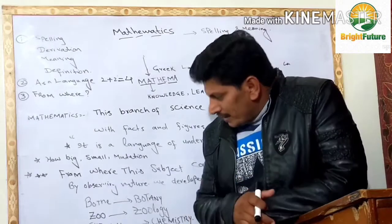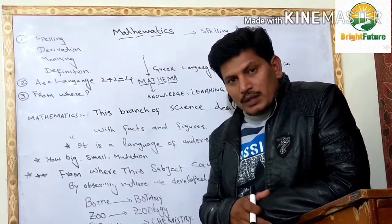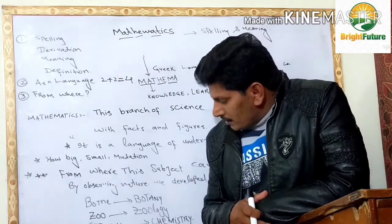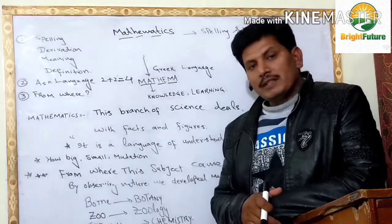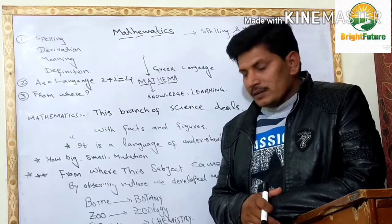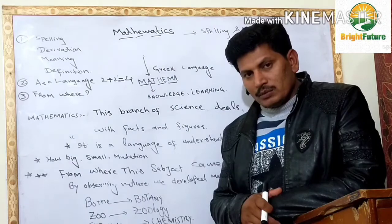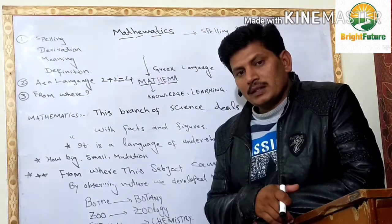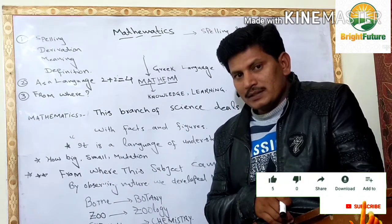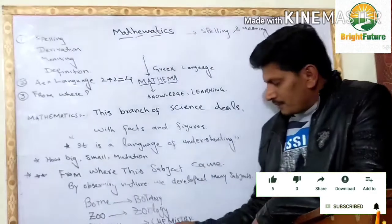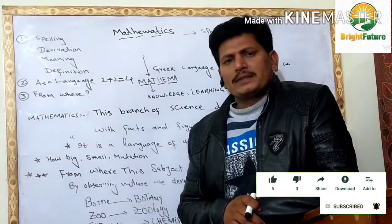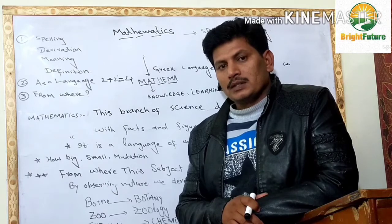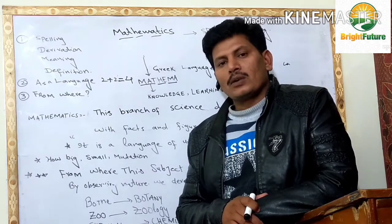Then we see the word zoo, which is a place where there are a lot of animals. From this word we developed a branch of science called zoology, the study of animals and birds. And if we discuss chemicals in some branch, that branch of science will be called chemistry. And if we discuss anything in the universe involving facts and figures, then that branch of science would also be called mathematics.